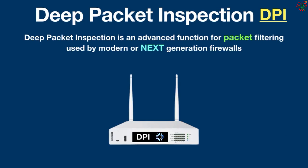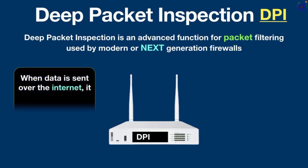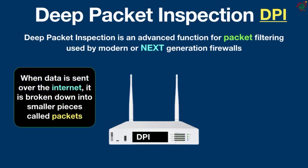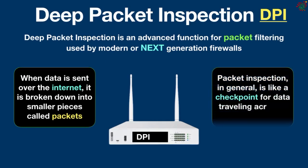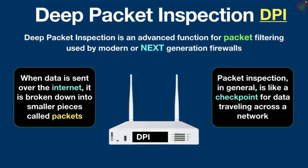In simple words, deep packet inspection can find, detect, classify, block, or reroute packets with specific code or data payloads that are not found, classified, blocked, or redirected by traditional packet filtering. At the most basic level, deep packet inspection is like a detailed examination of data being sent over the internet. When data is sent, it is broken down into smaller pieces called packets. DPI doesn't just look at the packet's basic details like where it is going — it goes deeper, checking its actual content.